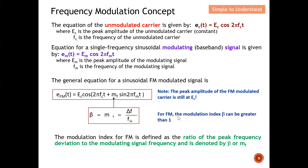For frequency modulation, the modulation index beta can be greater than one. I mention this to clarify: for AM, modulation index cannot exceed one because over-modulation will occur. But for frequency modulation, the modulation index can be greater than one. The modulation index for FM is defined as the ratio of the peak frequency deviation to the modulating signal frequency, denoted as beta — that is, peak frequency deviation divided by the modulating frequency.